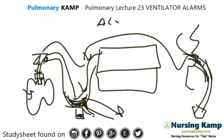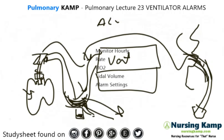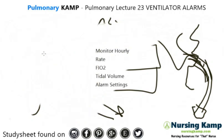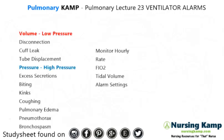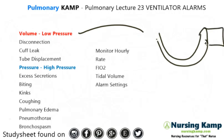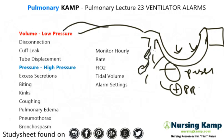How often do you monitor this ventilator? Generally hourly. You're monitoring the rate, the FiO2, the tidal volume, and making sure that the alarm settings are correct — these come from orders. The first basic alarm is the low-pressure alarm. When you have a tube connected to a pressured system — and ventilators use positive pressure — if there's a hole in the system, that's basically what a low-pressure alarm signals.